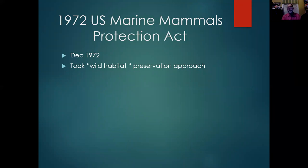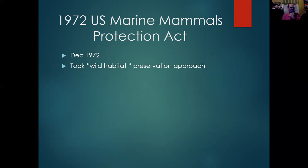Congress passed a pretty tough bill — the U.S. Marine Mammal Protection Act in December 1972 — which made very strong efforts to preserve and protect whales, dolphins, all kinds of whales, dolphins, manatees, and seals, especially on the West Coast.